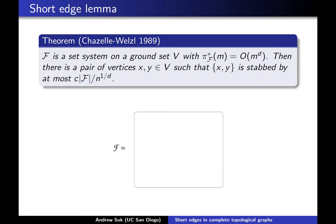One of the famous theorems due to Chazelle and Welzl on set systems with well-behaved dual shatter functions is this — it's also called the short edge lemma. It says that somewhere in your ground set there are going to be two vertices x and y such that that pair of vertices is going to be stabbed by very few members from your set system. The number of sets from F that stabs that special pair x and y is going to be at most a certain quantity depending on n and the dual shatter function.